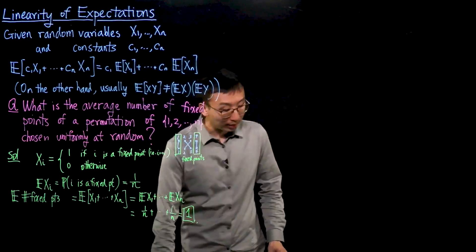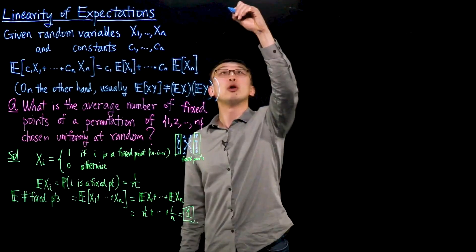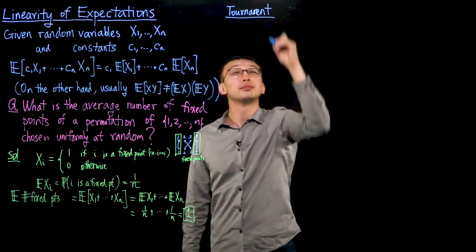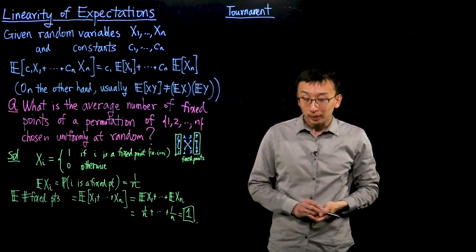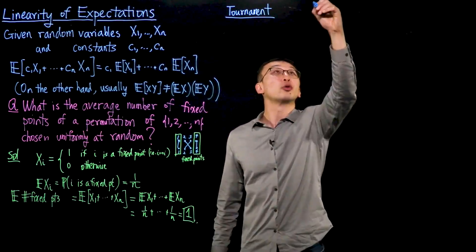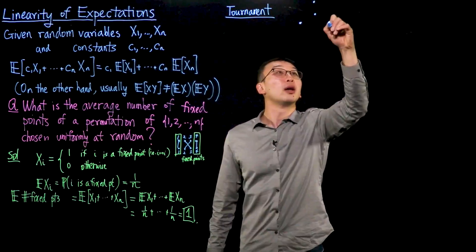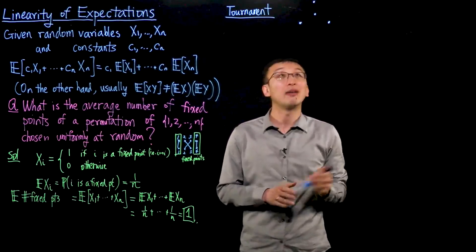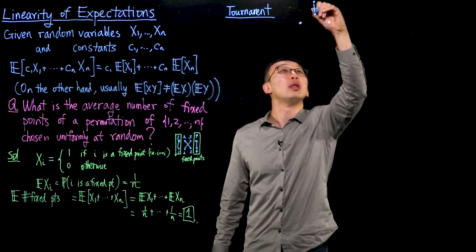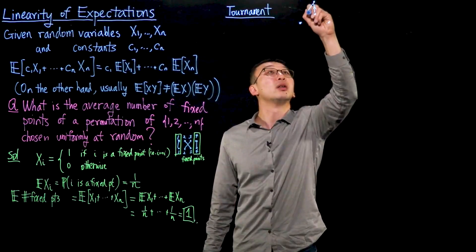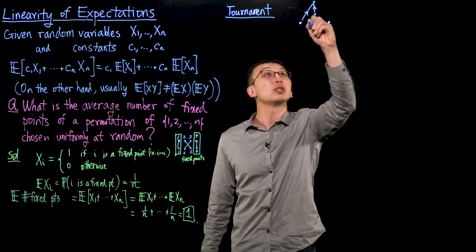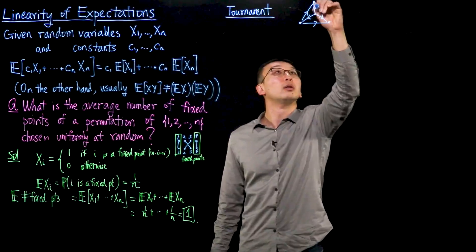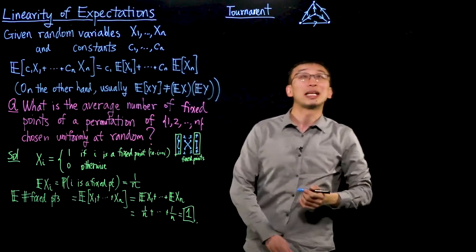Let us look at a slightly more interesting example. For this example we'll consider the concept of a tournament. So a tournament is a concept in graph theory referring to the following: there are n vertices (think of n players in some tournament), and between every pair of vertices, we have some directed edge pointing in one of these two directions. So that's an example of a tournament.